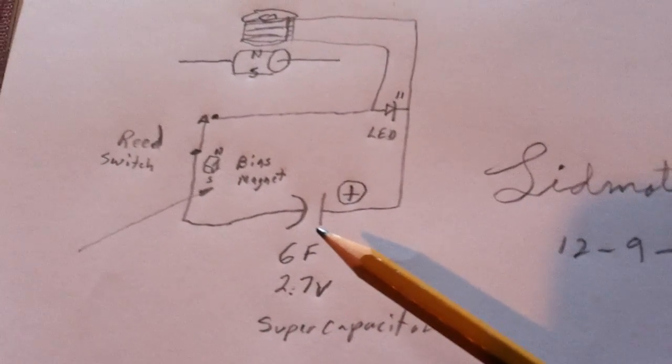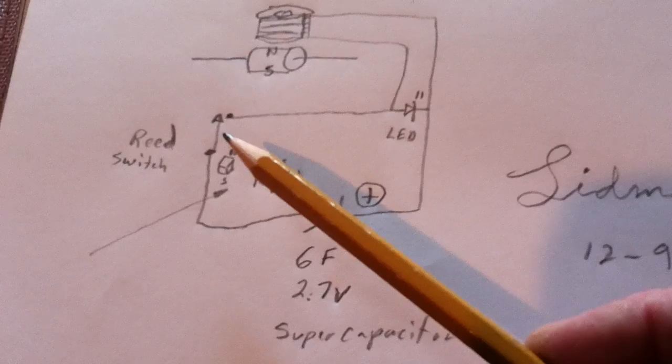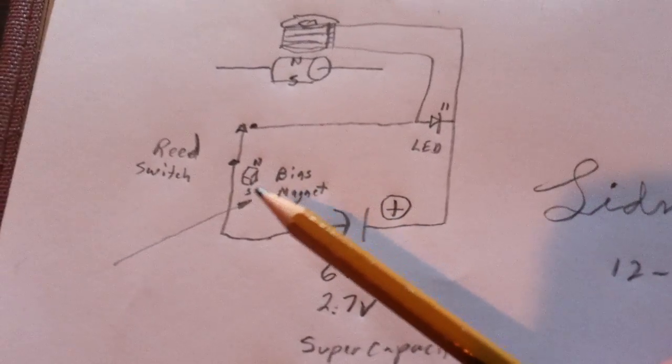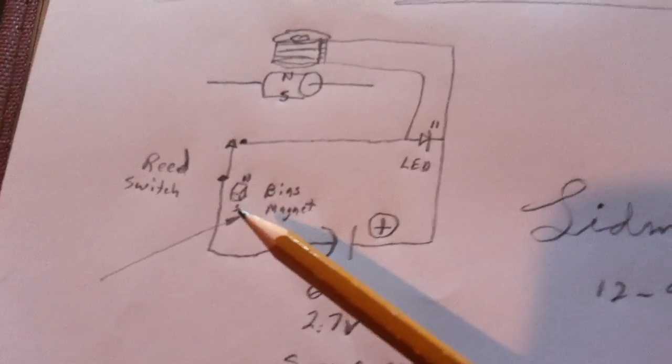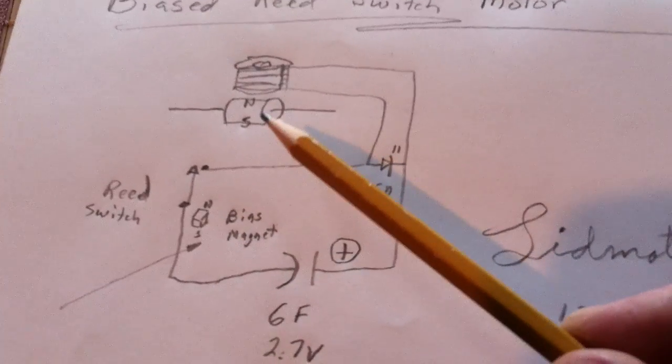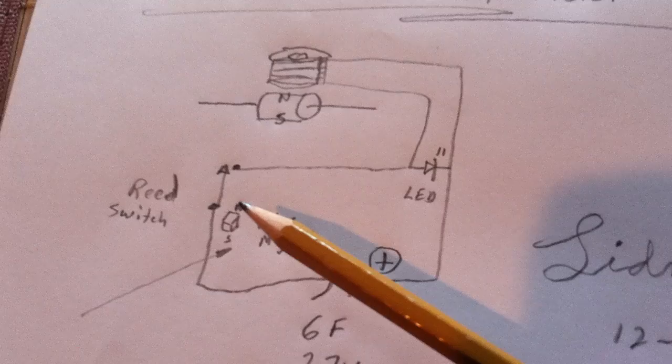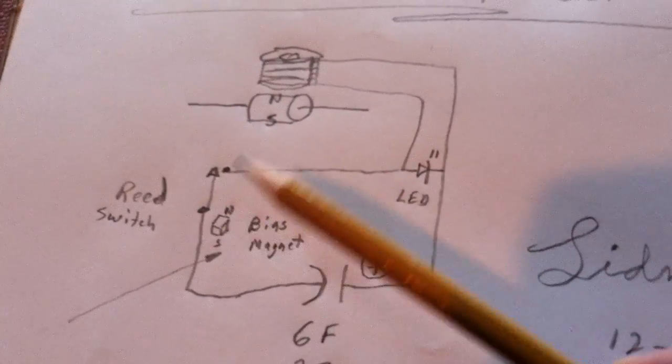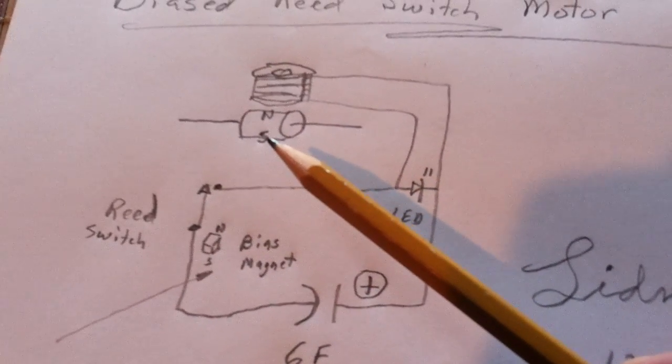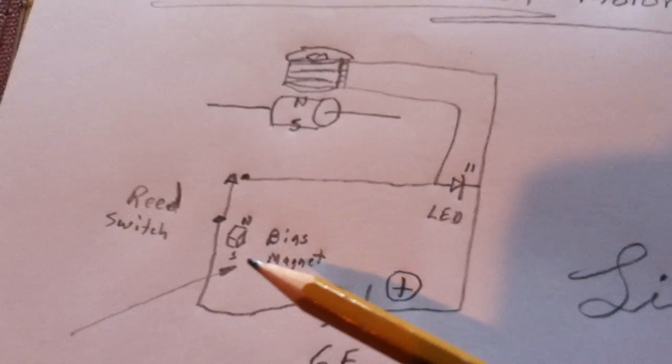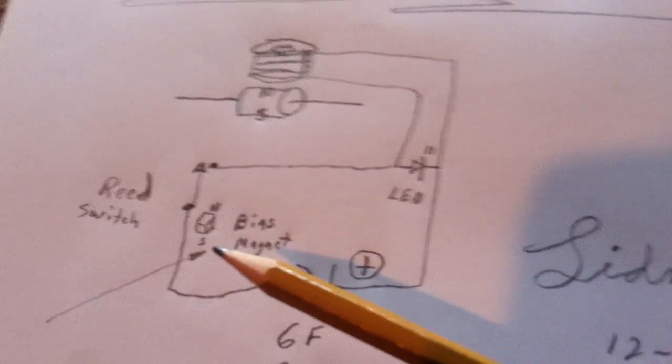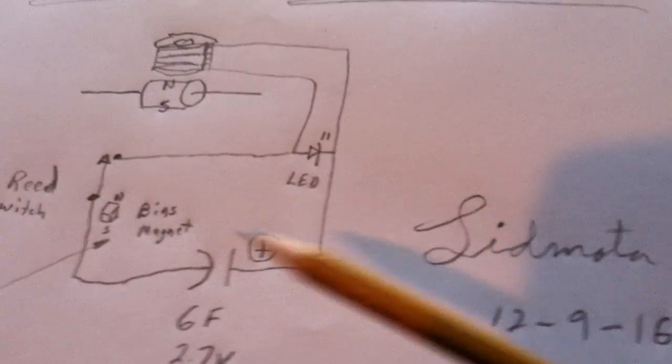I'm going to show it running off a super capacitor, but the reed switch is biased with a magnet right there. The reason it's biased is this would not run because of the north-south unless you tell the reed switch to only fire on one of these poles, and that makes the motor rotate. I've done this a lot of times before, but this is a good example of how it can be done.